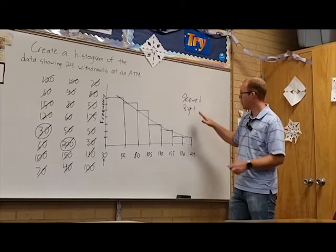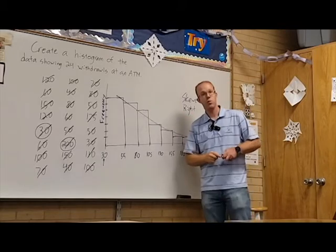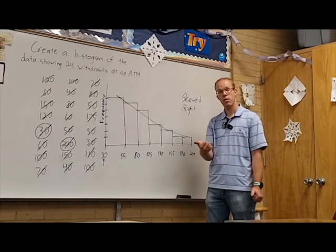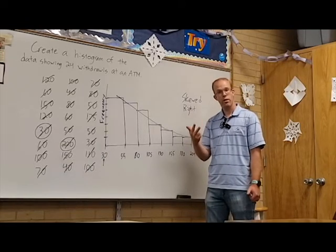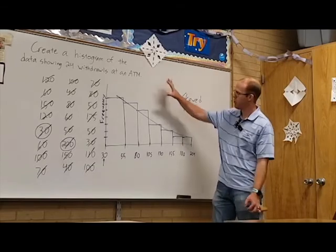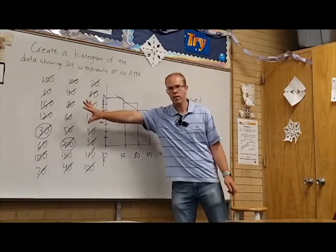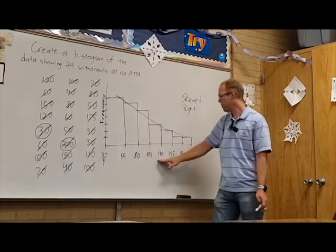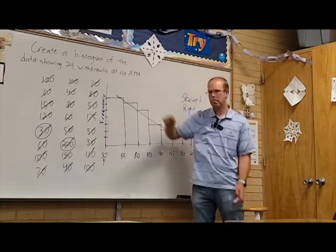Because it's skewed right, if I wanted to do measures of center and variation, I'd use the five-point summary with the median as the center. I'd do the first quartile, the third quartile, minimum and maximum to break that down. Just a quick example of how to turn a set of raw data into a histogram. Again, choose your intervals and then just count them up. Thank you.